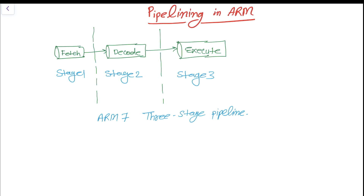Welcome back to this lesson. I'm going to show you what pipelining is in our microcontroller. ARM7 has a three-stage pipeline known as stage 1, 2, and 3. In stage 1, the core fetches the instruction; in stage 2, the instruction is decoded; and in stage 3, the instruction is finally executed. The pipeline is a mechanism in a RISC processor.